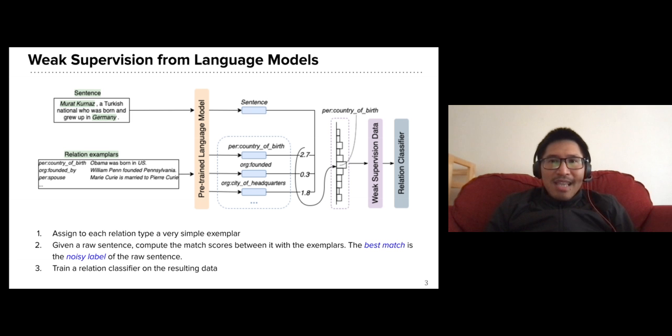The best match is then used as the noisy label. After annotating several raw sentences, we have a noisy dataset for training a relation classifier.